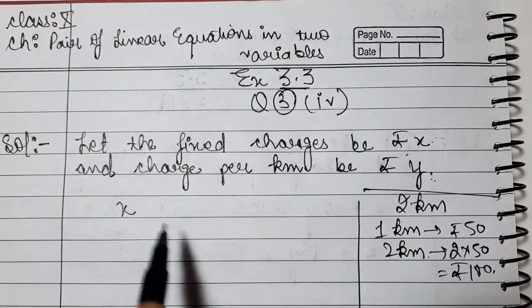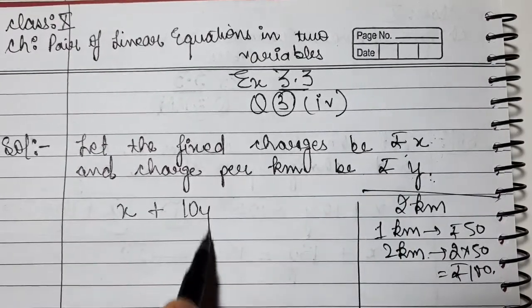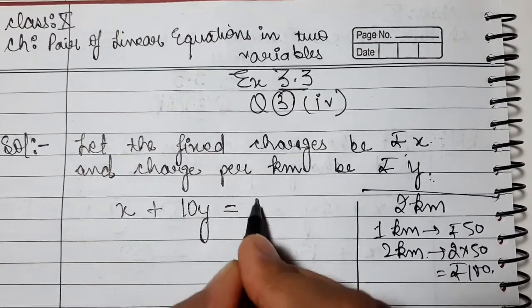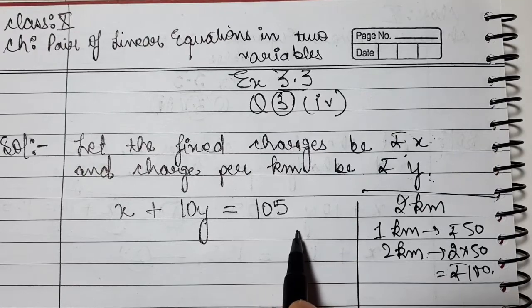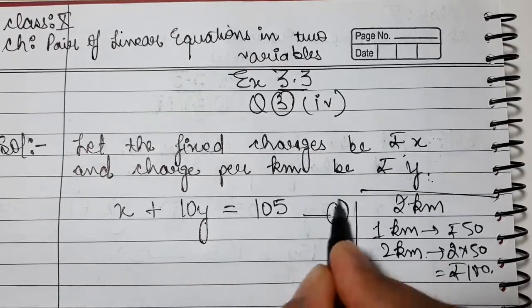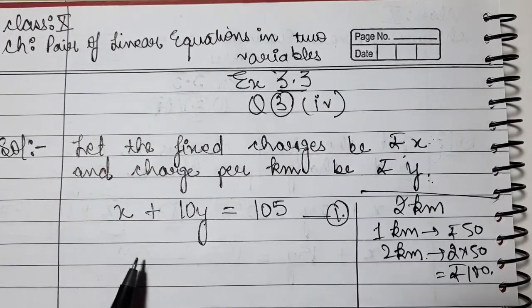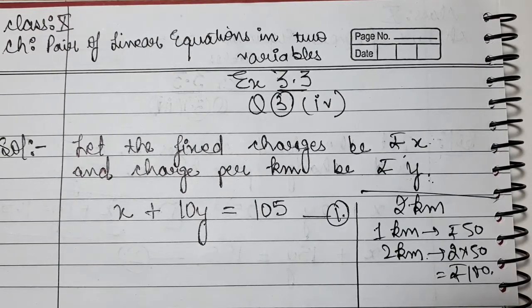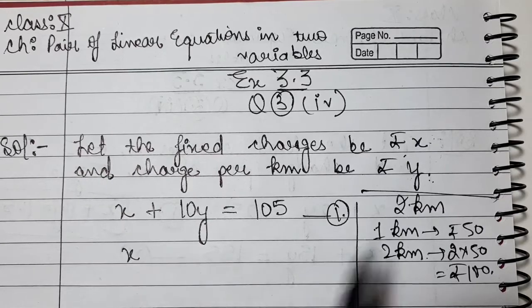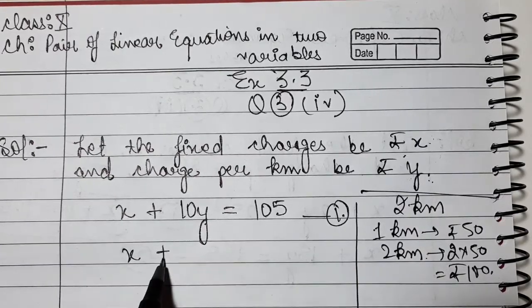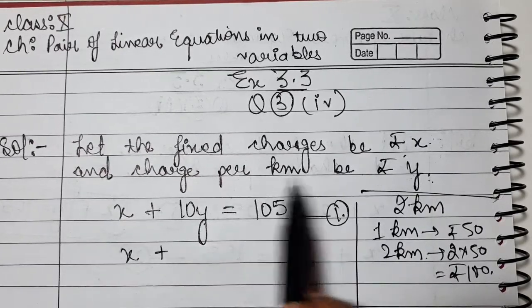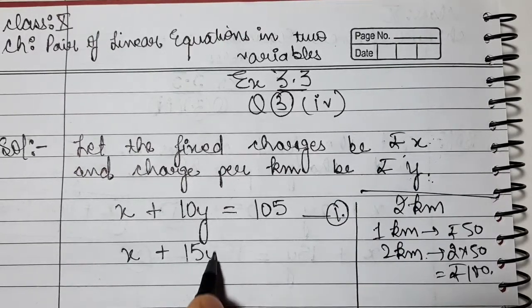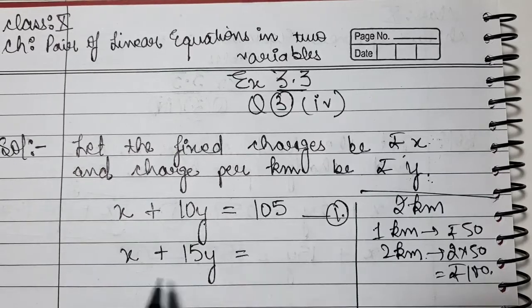So our first equation is: x plus 10y equals 105. Similarly, we'll make the second equation. For 15 km distance covered, Rs. 155 was paid. It also includes fixed amount plus 15 times y. If 1 km is Rs. y, then 15 km will be 15 times y, equals total Rs. 155. This is equation number 2.